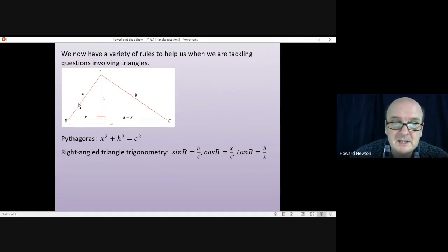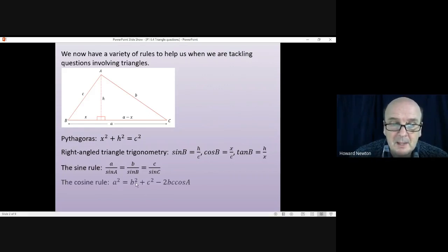We've got standard right angle triangle trigonometry, so sin(B) = h/c, cos(B) = x/c, tan(B) = h/x. We've now learned the sine rule: if we consider the whole of triangle ABC then a/sin(A) = b/sin(B) = c/sin(C), or we can write those three fractions the other way up.